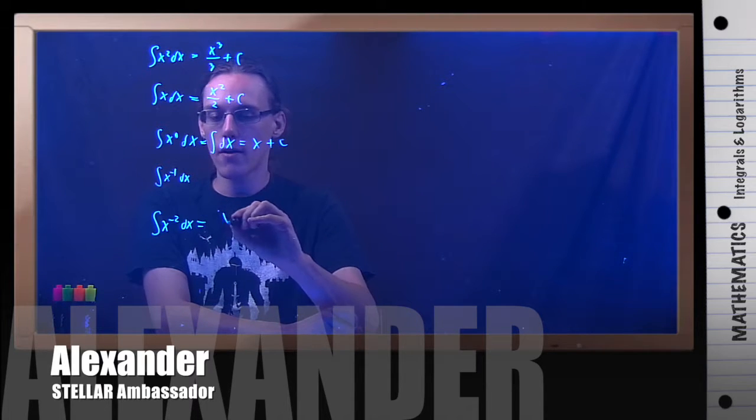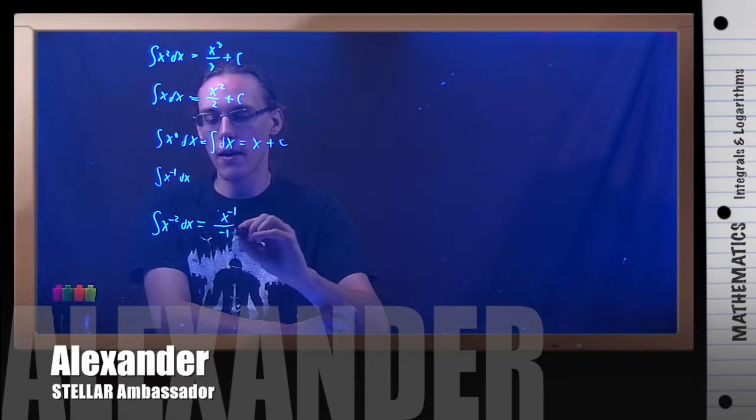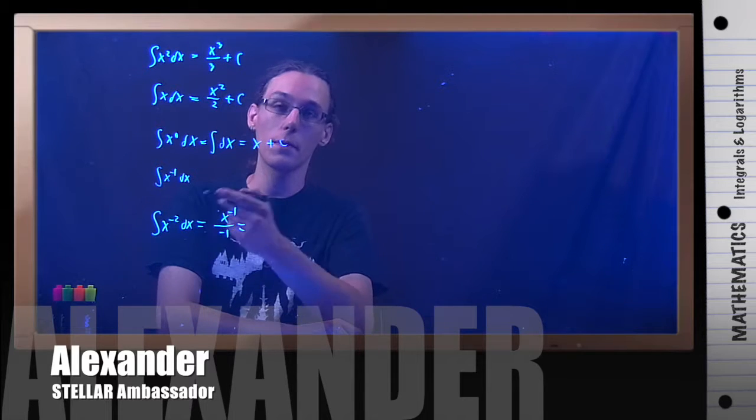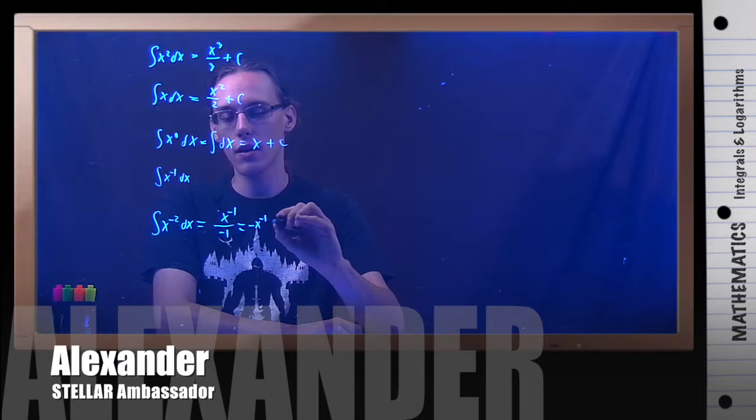Well, add 1 to the power and divide by the new power. Negative 2 plus 1 would be negative 1. So this is negative x to the negative 1.